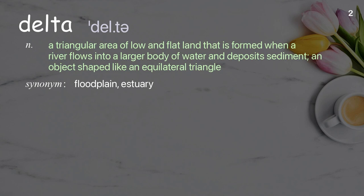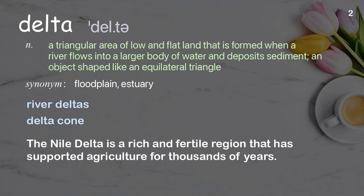Delta: a triangular area of low and flat land that is formed when a river flows into a larger body of water and deposits sediment; also, an object shaped like an equilateral triangle. Examples: river delta, delta cone. The Nile Delta is a rich and fertile region that has supported agriculture for thousands of years.